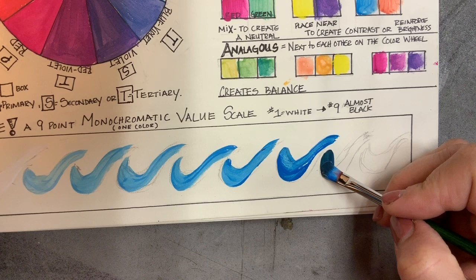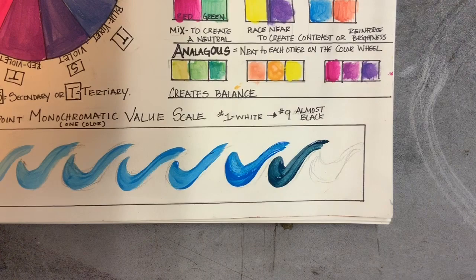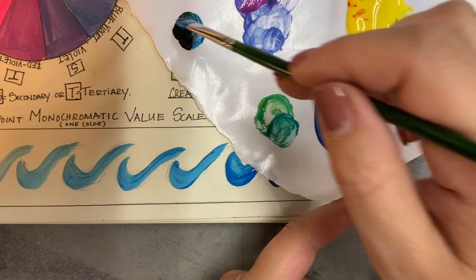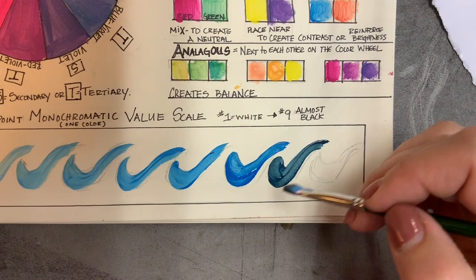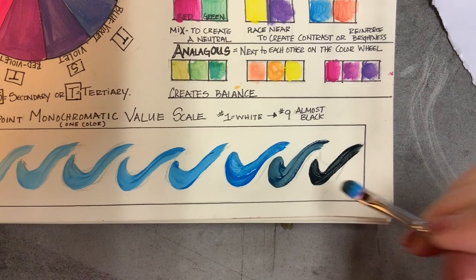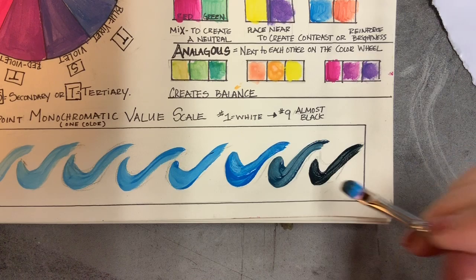So I've got a bit of a deeper tone of the blue, and now I'm going with a shade. I'm taking pure blue and just a little bit of black and creating a shade for my last number nine. That's why I want to say almost black, because I do want there to be a hue tone to that black. So the hue that we are using, the pure color that we're using, is blue. And there we go, a nine-point monochromatic value scale of swooshes.